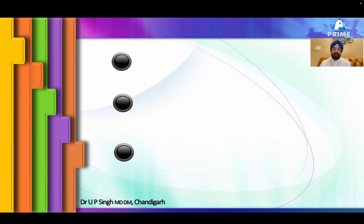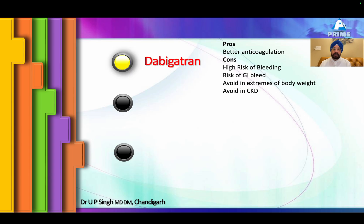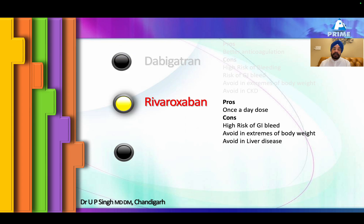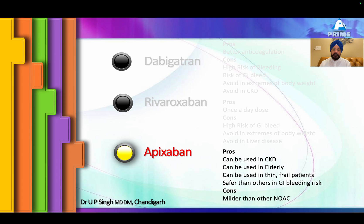Comparing the drugs: Dabigatran — pro: better anticoagulation; cons: high bleeding risk, high GI bleed, should be avoided at extreme body weights and in CKD. Rivaroxaban — the only advantage is once-daily dosing; the rest are all cons. Apixaban is the clear winner: it can be given in CKD, in the elderly, in thin and overweight patients. It is the safest for GI bleed, though it is a milder anticoagulant.